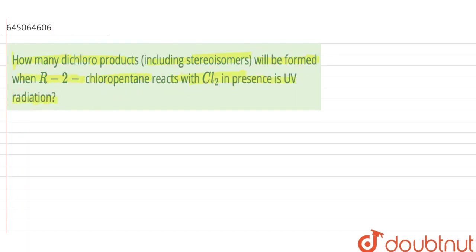So to proceed with this, first we'll write down the structure of R-2-chloropentane. When I write the structure of R-2-chloropentane, it will be CH3-C-Chlorine-CH2-CH2-CH3. This is a chiral carbon, that is all the four substituents are different. So this is a structure of R-2-chloropentane.